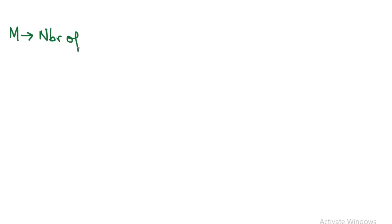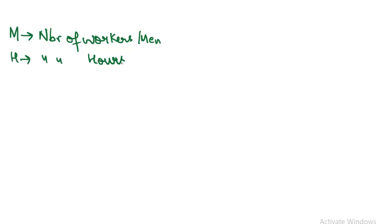We will have 4 terms used in this video. First, M is the number of workers, which are generally men. Second, H is the number of hours. Third, D represents the number of days. Fourth, W represents work done.